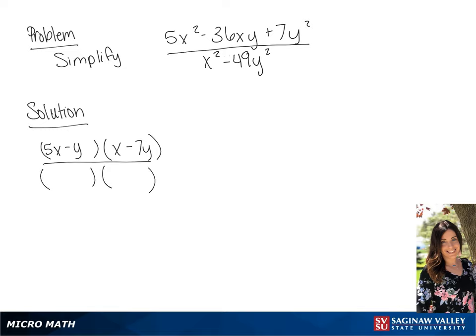In the denominator, this is going to factor to be (x plus 7y) times (x minus 7y). Since (x minus 7y) over (x minus 7y) is 1, we can cross those off.